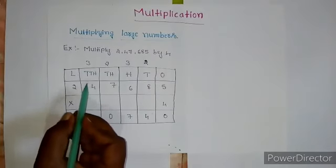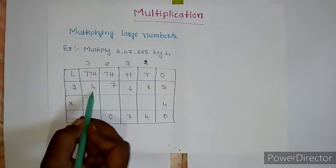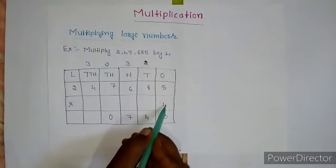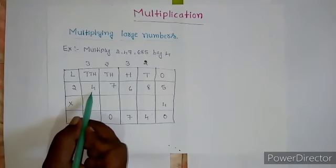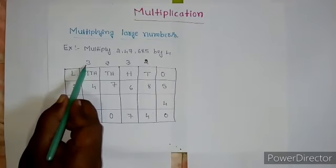Now I move to the 10,000 place. 4 into 4. 4 fours are how much? 16, right? 16 plus this carry 3 equals 19.